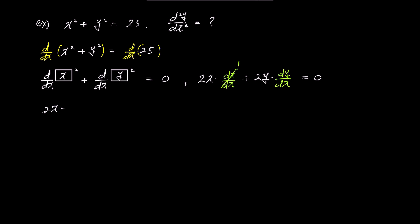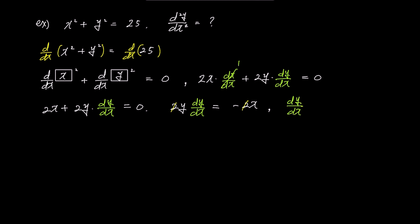The dx over dx on the left simplifies to 1, and the right side remains 0. We have 2x plus 2y times dy over dx equals 0. Moving 2x to the right side, we get 2y times dy over dx equals minus 2x. Dividing both sides by 2y, we finally obtain dy over dx equals negative x over y.